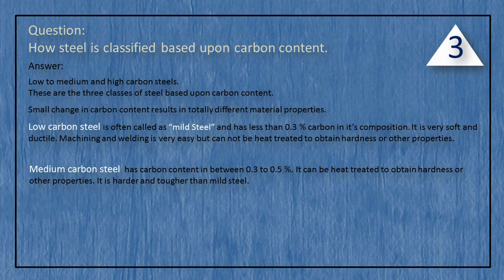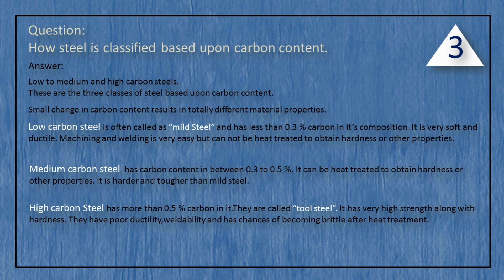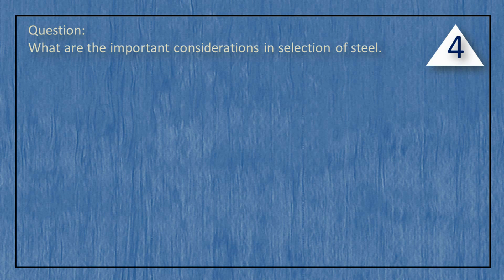Machining and welding of low carbon steel is very easy, but it cannot be heat treated to obtain hardness or other properties. Medium carbon steel has carbon content between 0.3 to 0.5%. It can be heat treated to obtain hardness or other properties, and it is harder and tougher than mild steel. High carbon steel has more than 0.5% carbon and is called tool steel. It has very high strength along with hardness, but has poor ductility and weldability, with chances of becoming brittle after heat treatment.